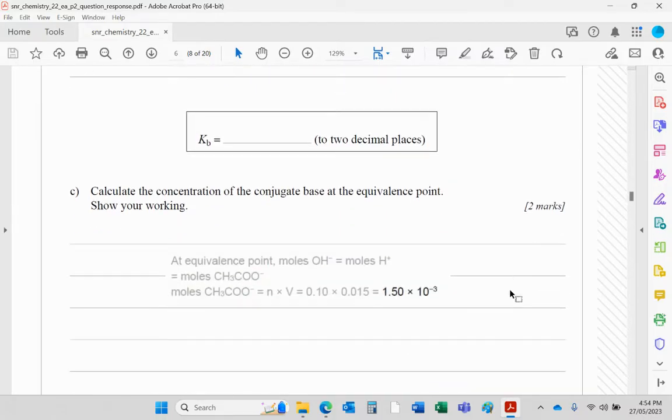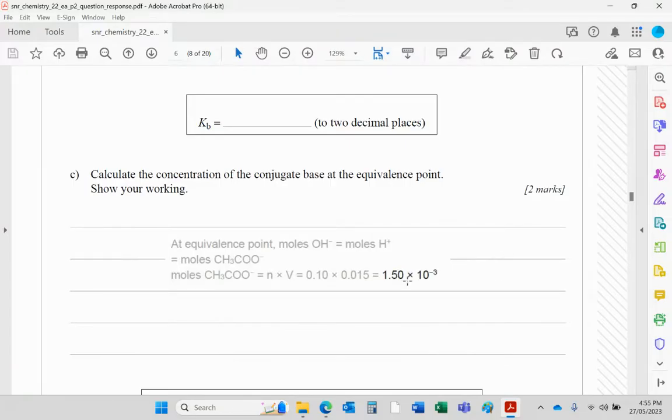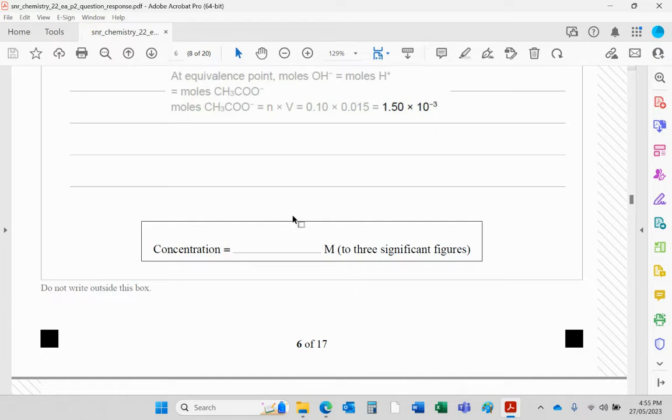Calculate the concentration of the conjugate base at the equivalence point. Well, effectively, at the equivalence point, the number of moles of the OH minus will be the same as the number of moles of the H+, which is the same as the number of moles of the CH3COO minus. So doing a little bit of maths: concentration of course is number of moles times volume. Number of moles is 0.1 of alkali would make 0.1 of the acid. So 0.1 times 0.015. That volume there is in liters because this is in moles per liter. So effectively, the number of moles is equal to concentration times volume, which is that there. And again, write that into the box please.